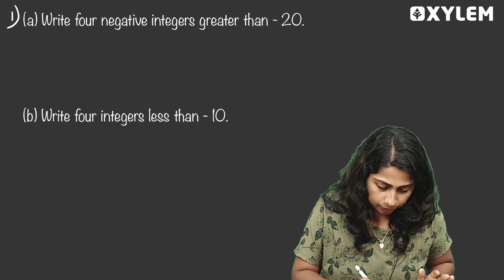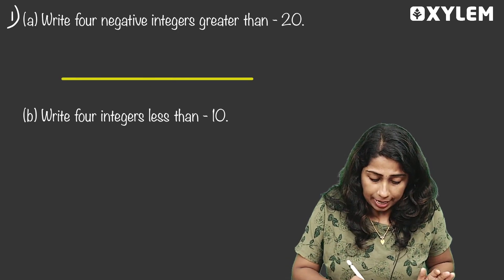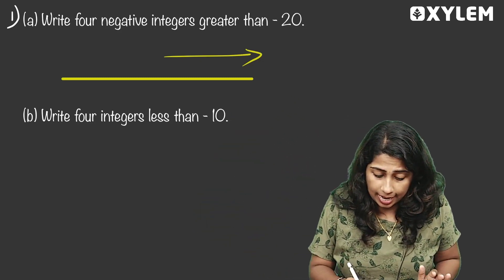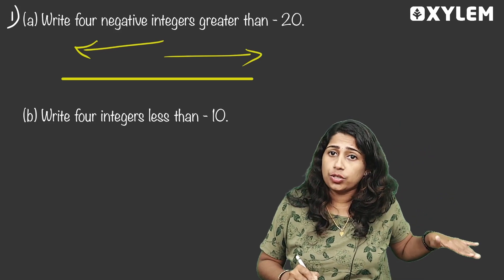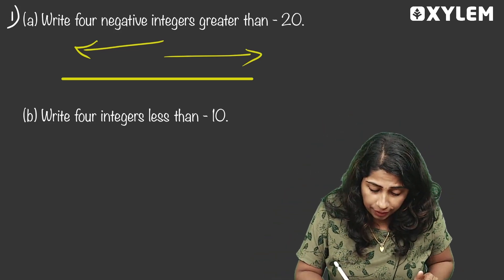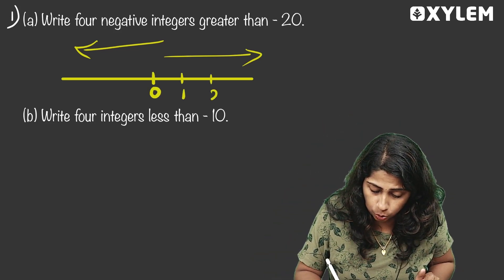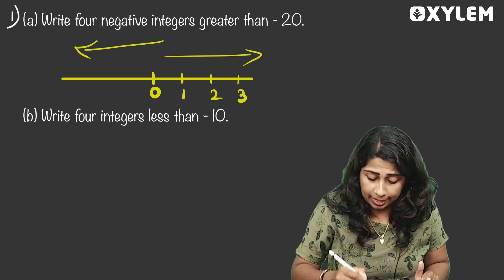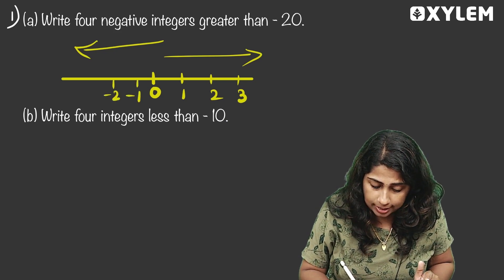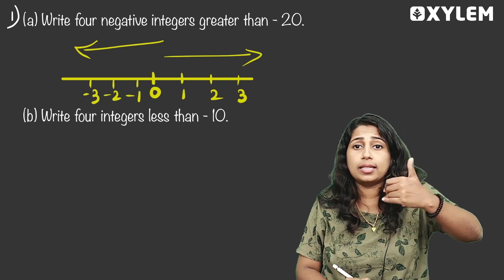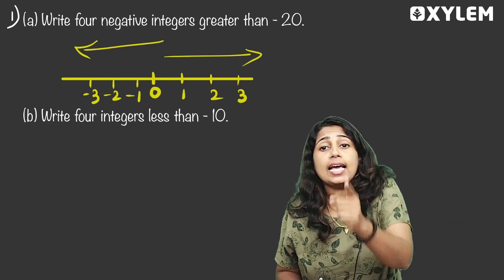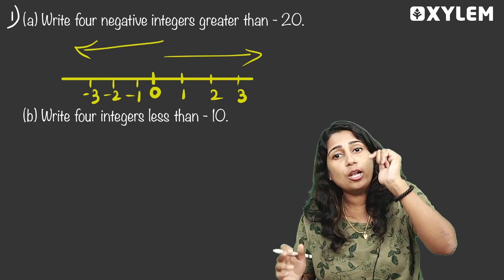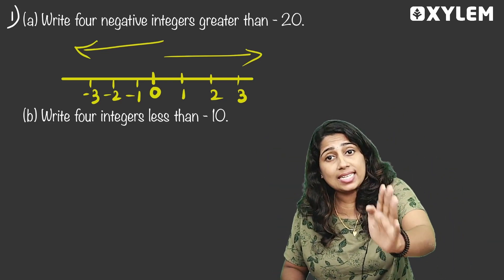We have a number line. We call the right side the greater value and the left side the smaller value. On the right side: 1, 2, 3. On the negative side: negative 1, negative 2, negative 3. The value decreases as you move left.